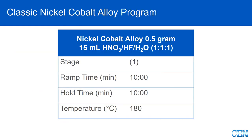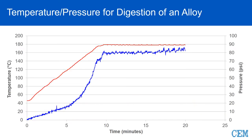Here's the program we ran on the MARS with half a gram of nickel-cobalt alloy in 15 mL of a 1:1:1 mixture — 5 mL nitric, 5 mL HF, and 5 mL water. You can use the Express vessel because the temperature is low — just a 10-minute ramp and 10-minute hold to 180°C. Be aware of HF vapors. The red temperature line holds nicely at 180°C, while the pressure is very low, only bouncing between 80 and 90 psi — much lower than you'd see for organic digestions.